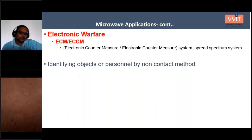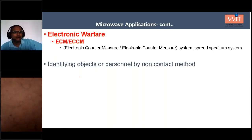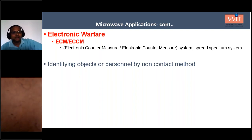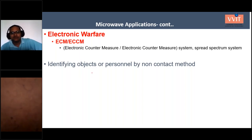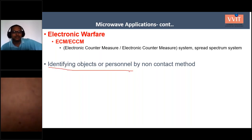A wartime application of microwaves is electronic warfare — ECM (Electronic Counter Measure) and ECCM (Electronic Counter Counter Measure). ECM technology, commonly known as a jammer, is used to block unwanted signals. Microwaves can also be used to identify objects or personnel by non-contact methods.